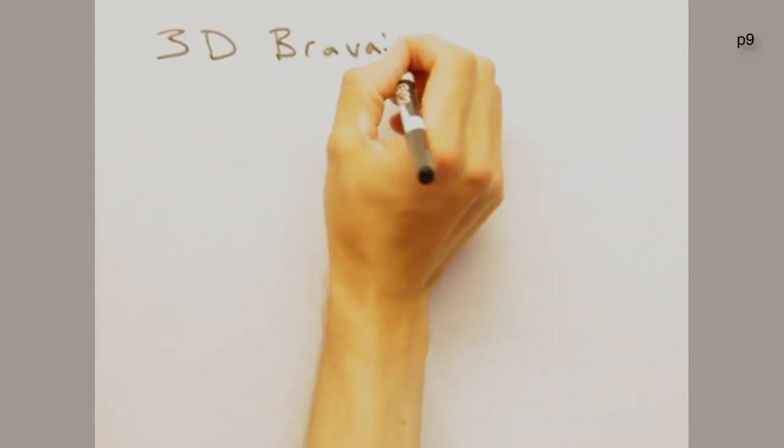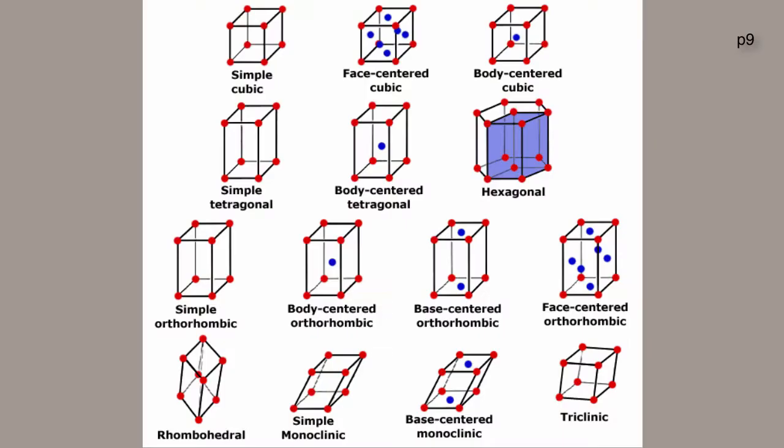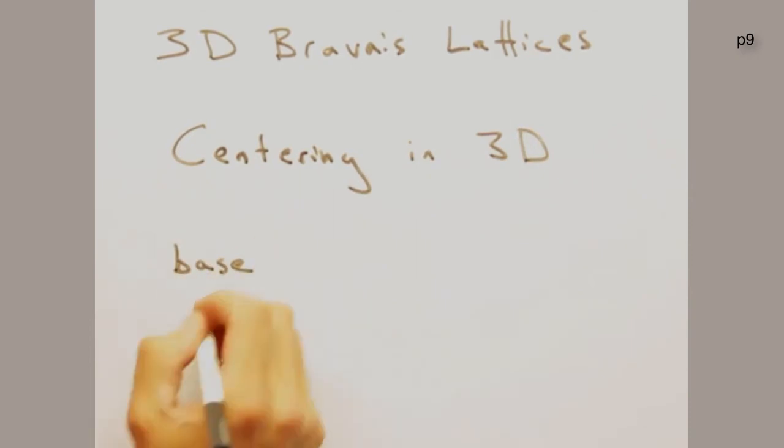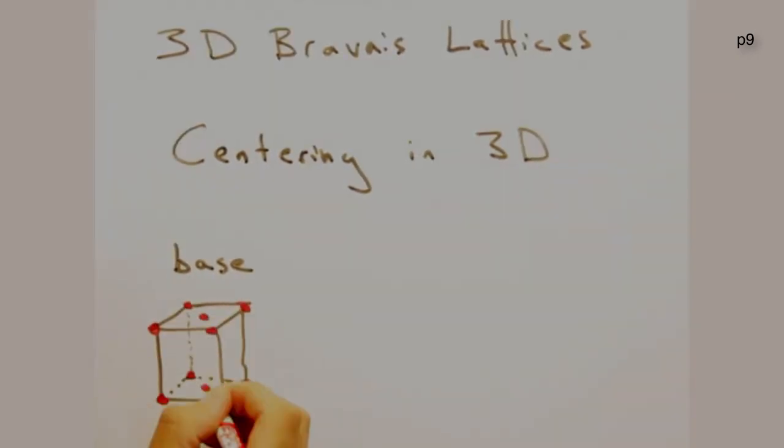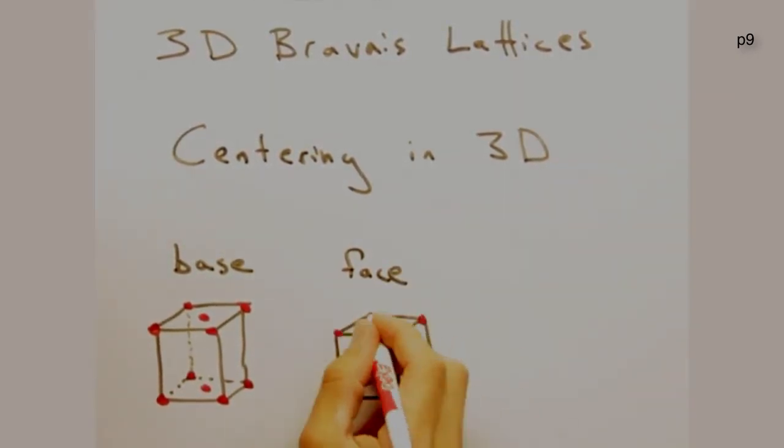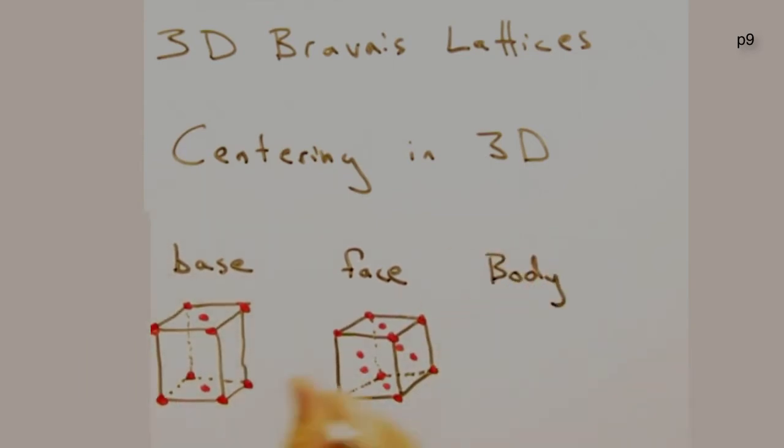As in 2D, we also have Bravais lattices in 3D as given in this table here. Although we just call it centering in 2D, in 3D we actually have different types of centering. There's base centering, face centering, and body centering, which are shown here. It'd be good to get familiar with this table and know examples of each.